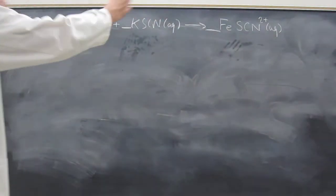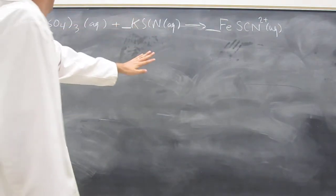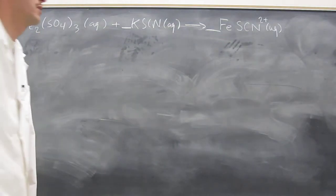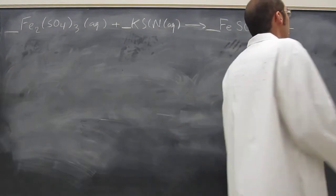As you can see, the equation is not balanced. In fact, there's no potassium atoms anywhere to be seen, there's no sulfate ions anywhere to be seen. So of course, you're going to have to have potassium sulfate in there.